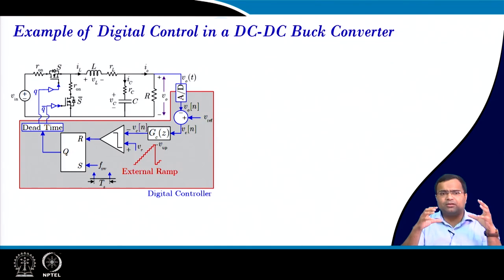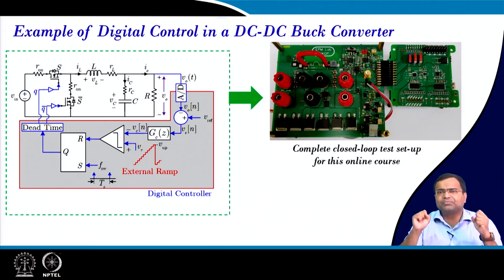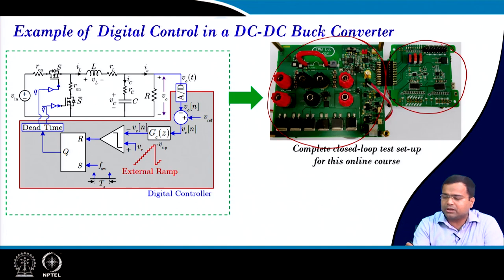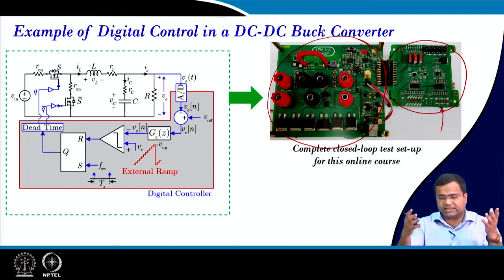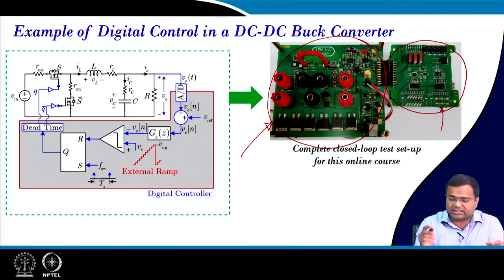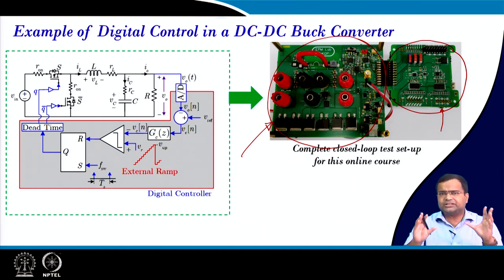Here I am showing an example of a buck converter. In this course, we will have Buck and Boost Converter hardware extensive case studies using this test setup. This is the power stage architecture, and here is a board-to-board connector — a signal conditioning board. Just below this board there is an FPGA card, which I will expand in the next lecture. This power stage is configured in such a way that we can use it as both a buck as well as boost converter. I will be showing multiple experimental case studies using this setup where we will implement digital controller using an FPGA.